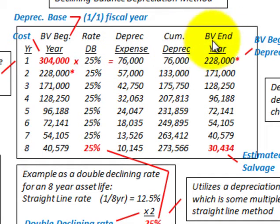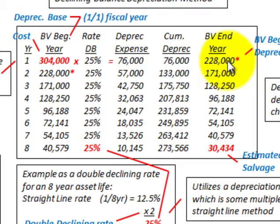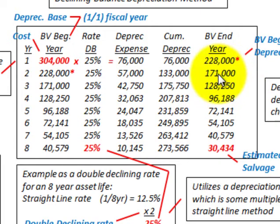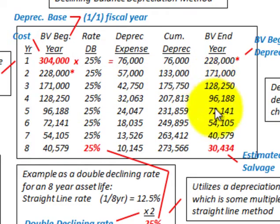Now we determine our book value at the end of the year. The depreciation expense of $76,000 subtracted from the beginning carrying value gives us $228,000. The end-of-year book value becomes the beginning carrying value for the next year. So $228,000 times 25% gives us a depreciation expense for year 2 of $57,000, and subtracting that from $228,000 gives us our new book value. We just continue this process through each year.